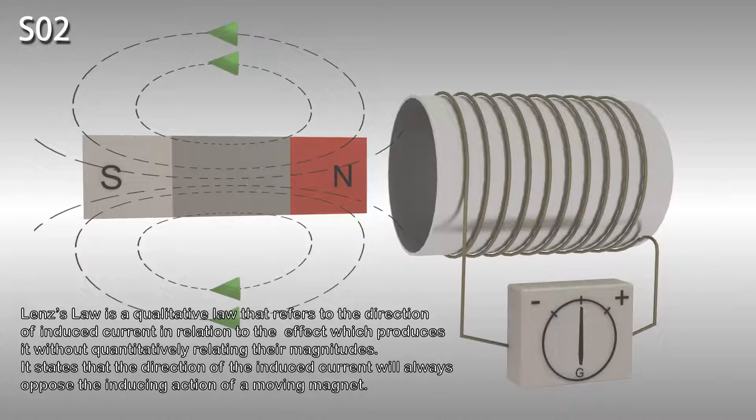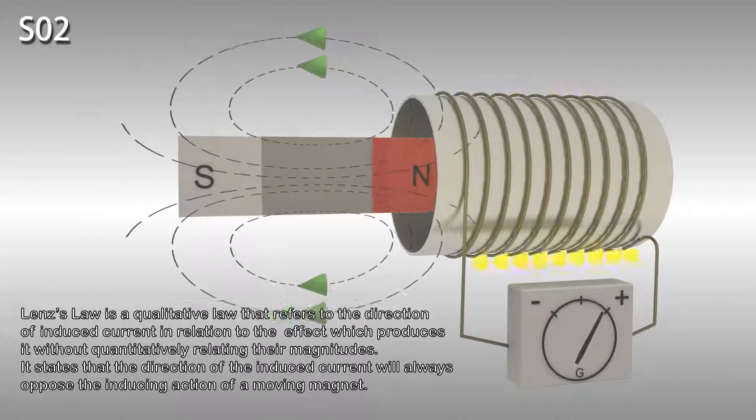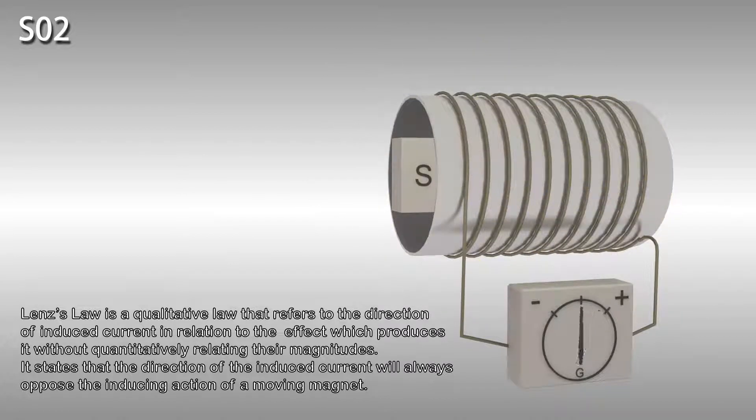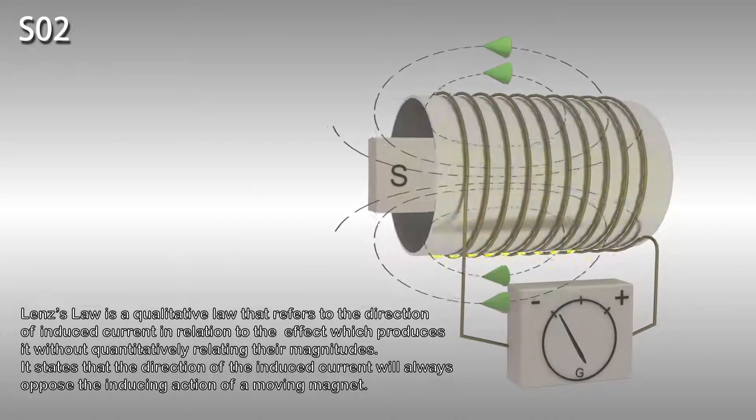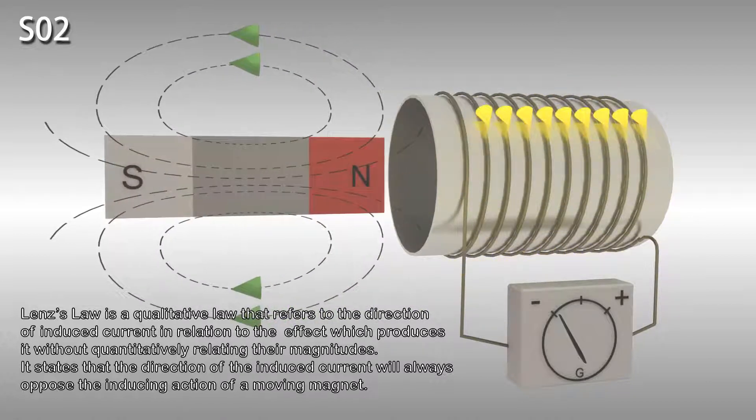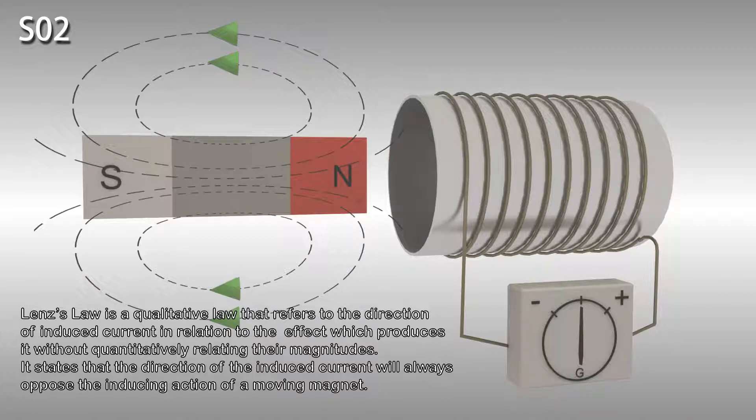Lenz's law is a qualitative law that refers to the direction of induced current in relation to the effect which produces it without quantitatively relating their magnitudes. It states that the direction of the induced current will always oppose the inducing action of a moving magnet.